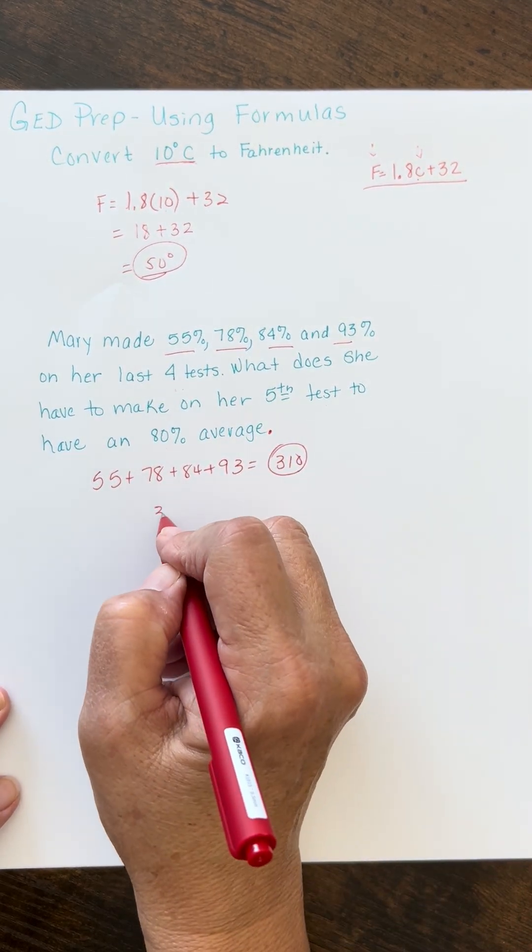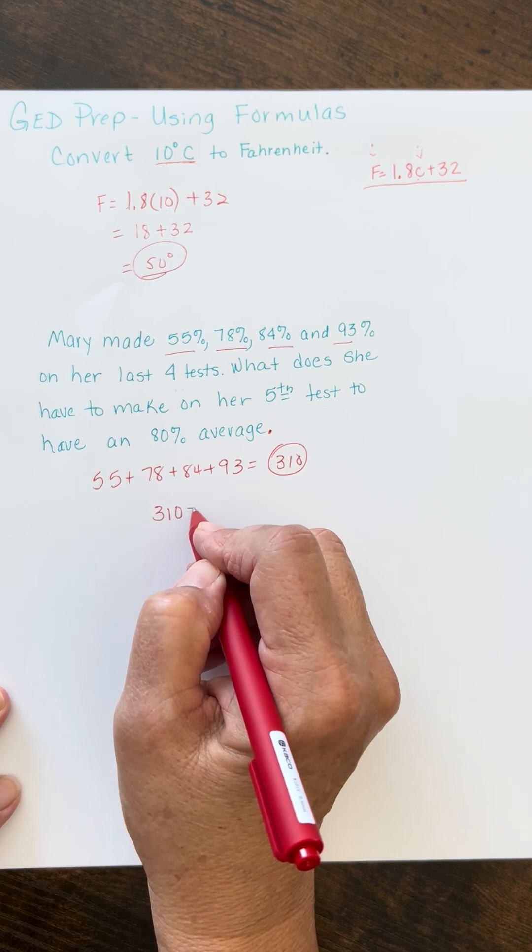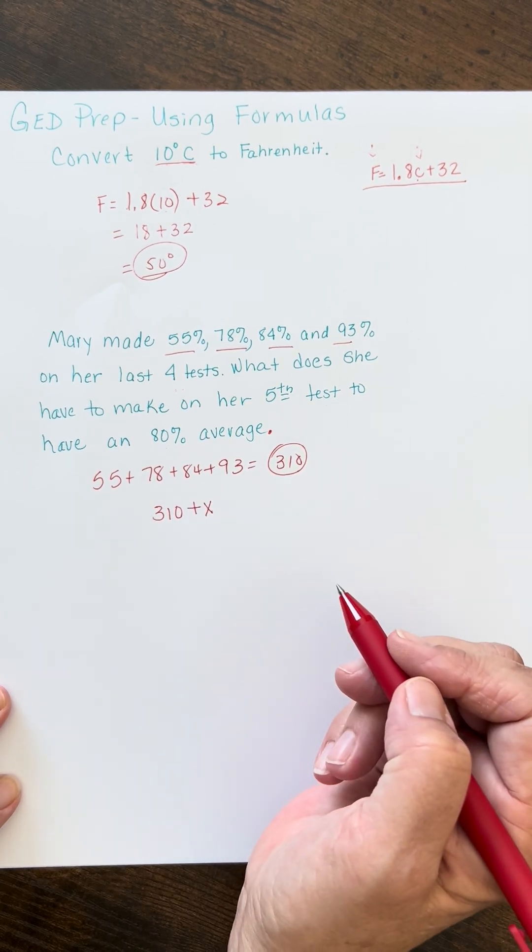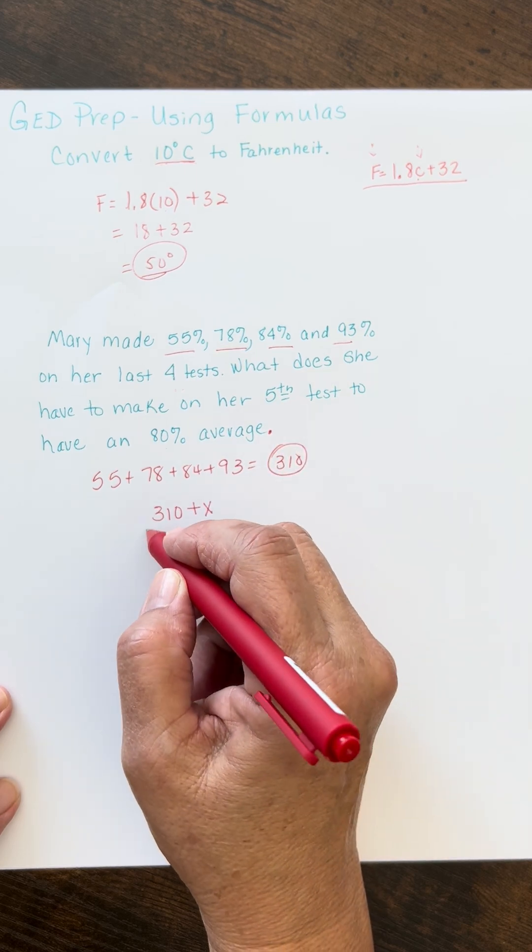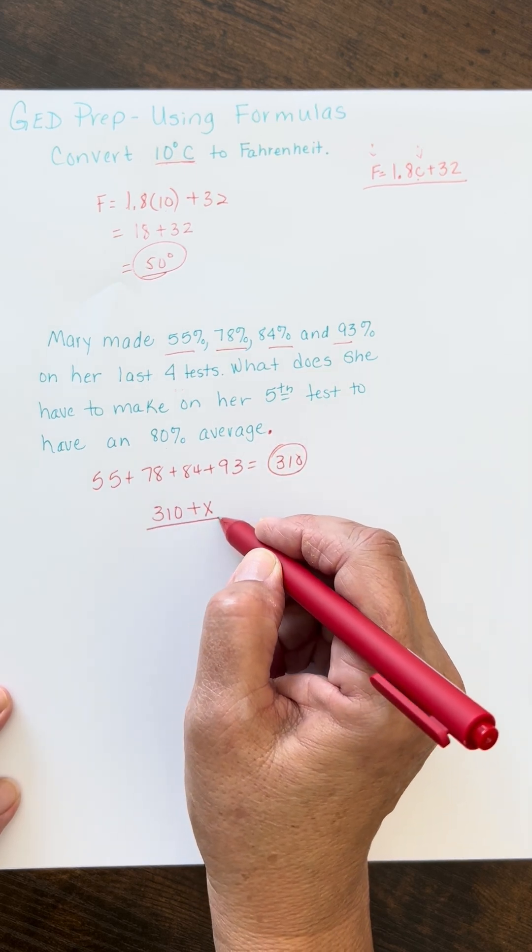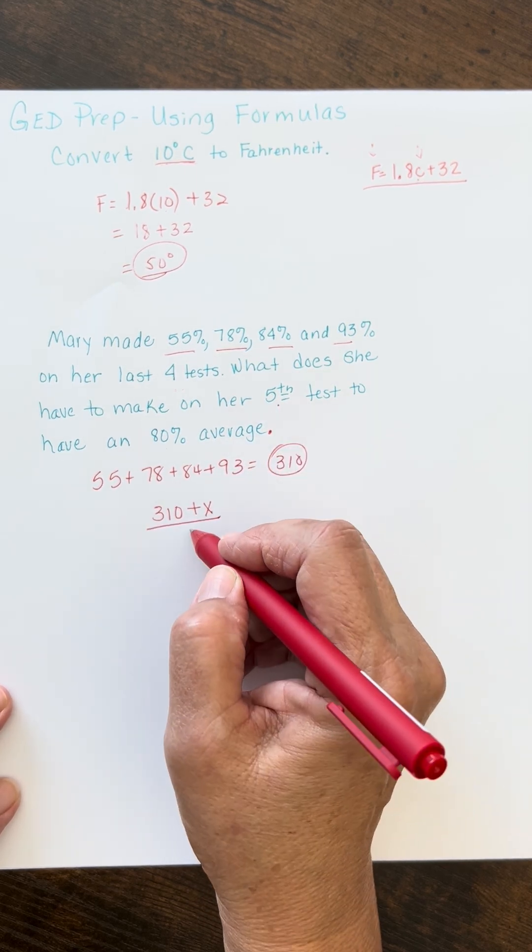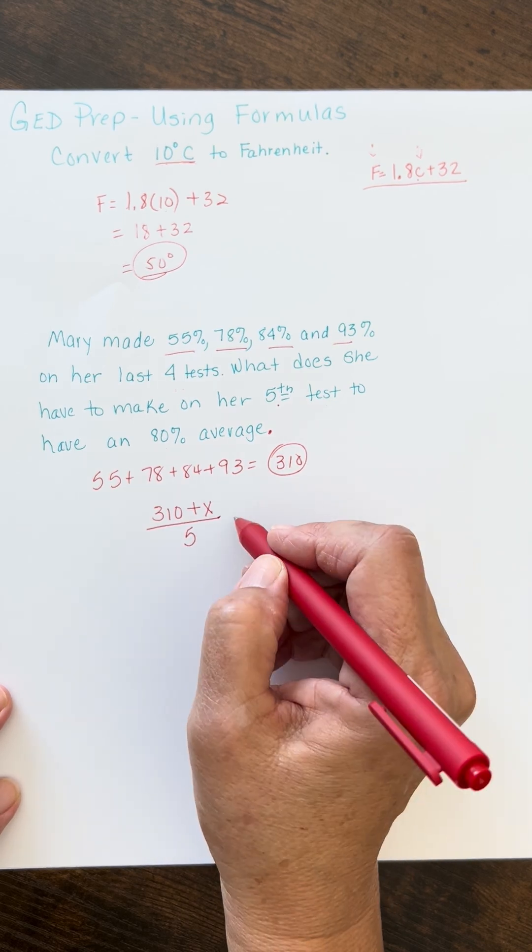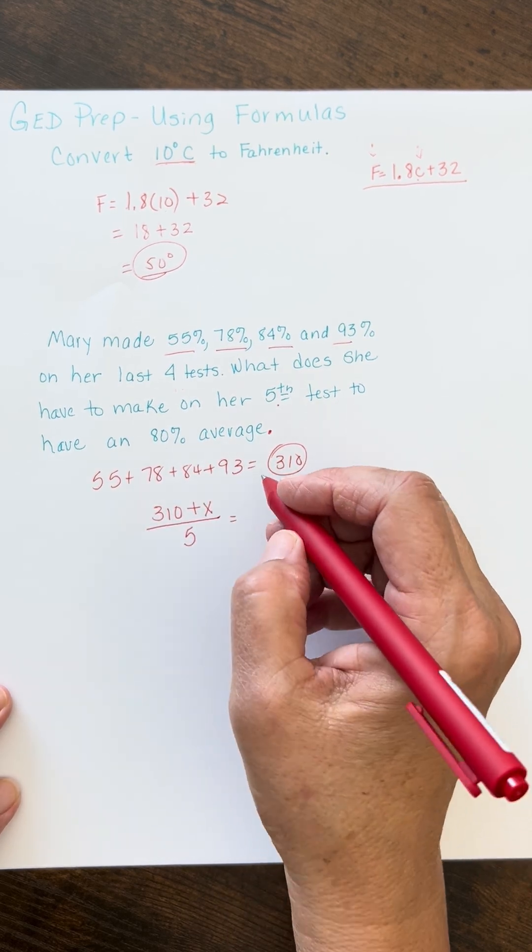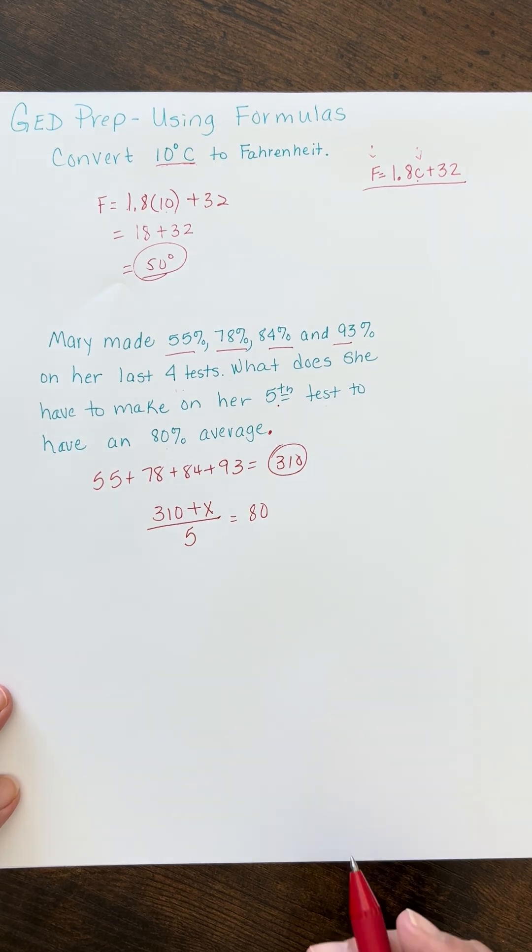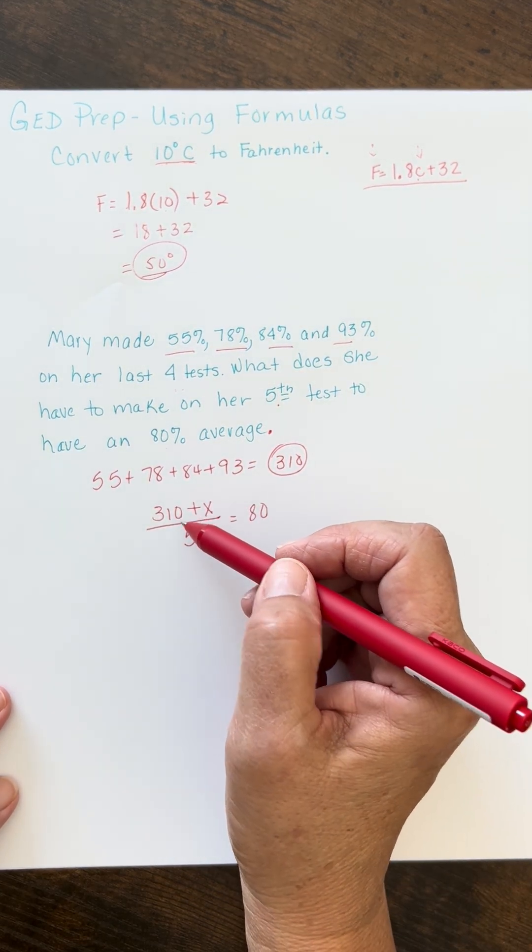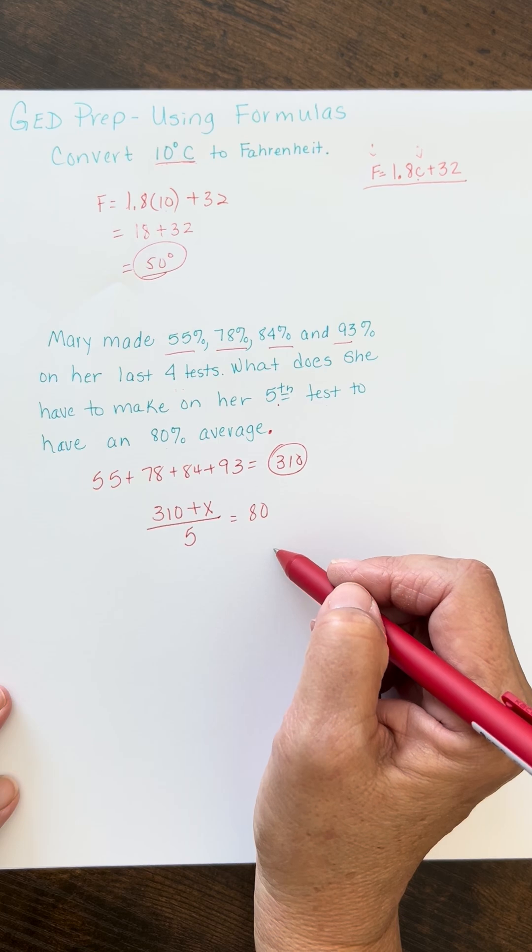Now, our new score is going to have all those things plus X, where X is whatever she makes on her fifth test. Now, we're going to divide that by how many tests we have, 5, and we want that to equal an 80% average, okay? So, now, what do we do? We have an equation we can solve.